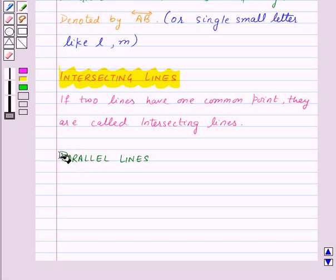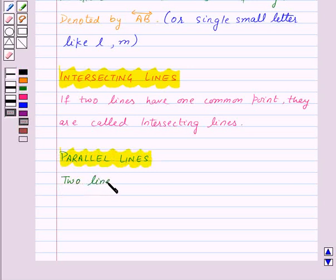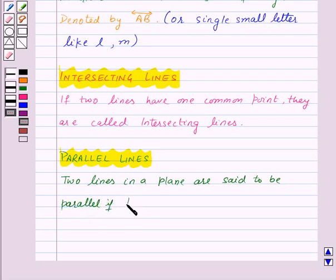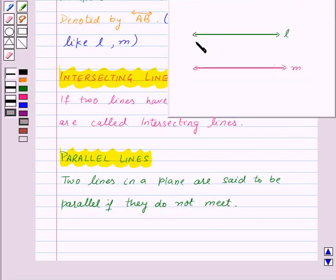Next we have parallel lines. Two lines in a plane are said to be parallel if they do not meet. For example, line L is parallel to line M. And we write it as line L is parallel to line M.